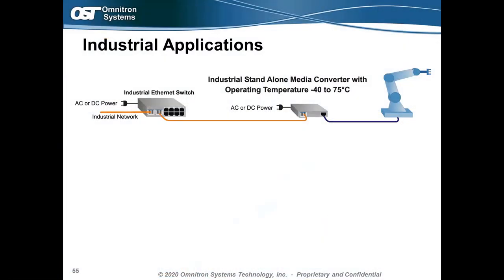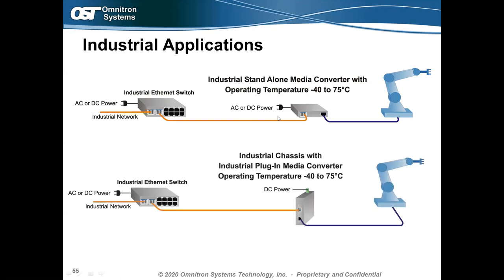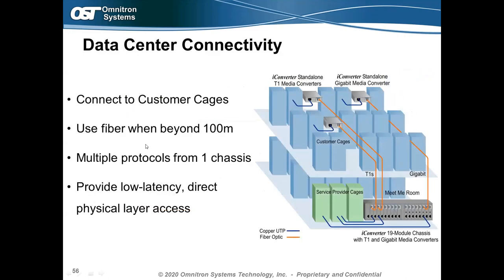In industrial applications, Omnitron's industrial media converters run fiber from an industrial Ethernet switch to the factory floor and convert to copper. The key requirement is a media converter supporting an industrial temperature range — negative 40 to 75°C (up to 167°F) — powered by AC or DC. Omnitron also offers industrial chassis where industrial-rated media converter cards can be plugged in, supporting that negative 40 to 75°C range, with DC-powered and flexible architecture for swapping different converters by application.